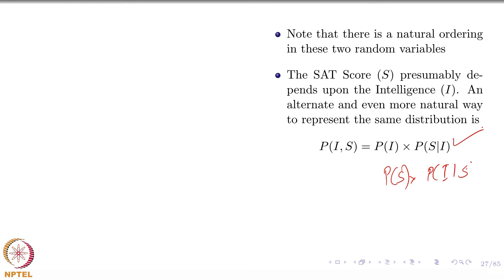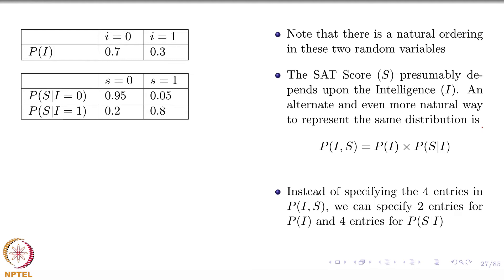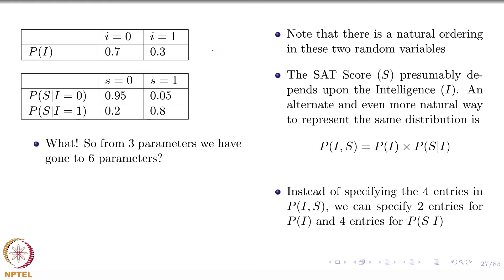From one joint distribution I have split it into two distributions. Instead of specifying 4 entries, now I am specifying 6 entries — which sounds worse. But actually by factorizing, the number of free parameters does not increase, because within each row the values must sum to 1. So both the original and the factorized form have 3 parameters.